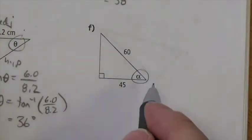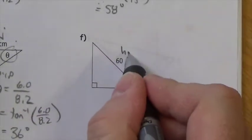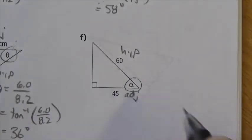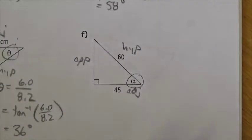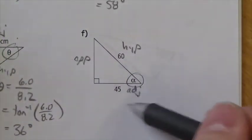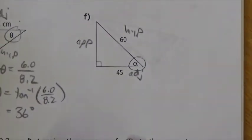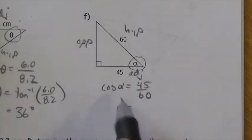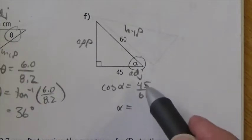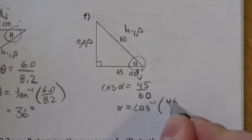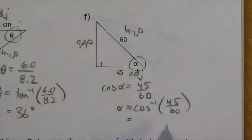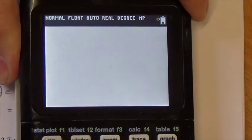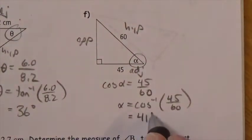Because alpha is the labeled angle, that's the one we're interested in. The hypotenuse is opposite the right angle — that's 60. The side 45 is being used to create that angle, so it's adjacent to that angle. Over here is the opposite, but I have no information about it. What trig ratio combines the adjacent side and the hypotenuse? Cosine. So the cosine of alpha equals 45 divided by 60. Using the inverse function: second cosine of 45 divided by 60. Press enter and we get 41 degrees. So alpha is 41 degrees.